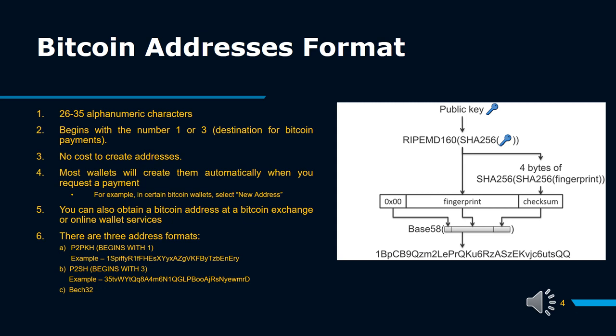For example, in certain Bitcoin wallets, select new address. A wallet comes with an address by default, which is why things can get confusing at times. But although a wallet comes with an address, it's important to remember that it's not the same as an address. A cryptocurrency wallet can consist of a string of different addresses.